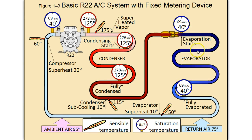As it moves through the evaporator it is picking up latent heat — a tremendous amount of heat that must be absorbed by the refrigerant for it to change state. So it changes state from liquid to vapor until it is fully evaporated. At this point it is 100% evaporated and begins to pick up superheat.